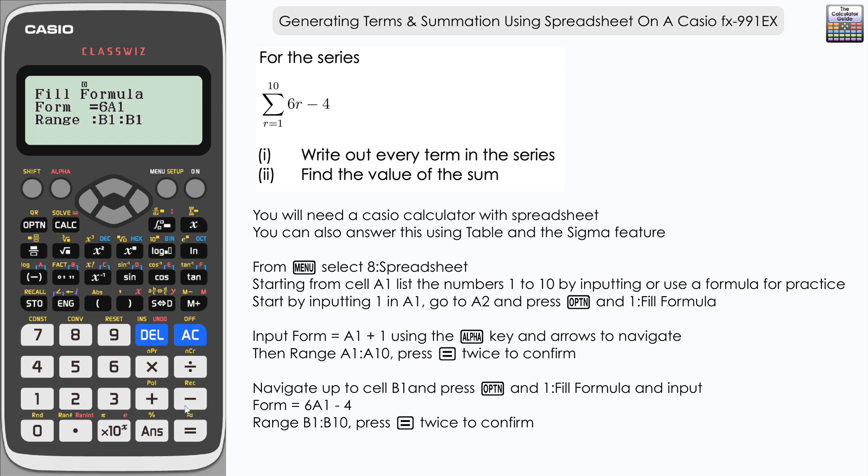And then we want that from a range B1, the start of our formula, all the way down to B10, we've got 10 terms in this series, equals and then equals again to confirm. And you can see here that column B has been populated with the terms in our series all the way down to the 10th term 56 there.